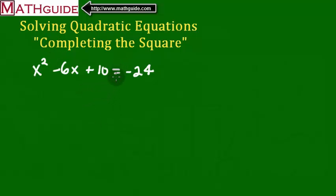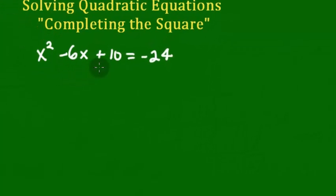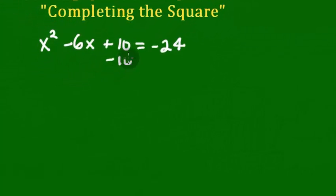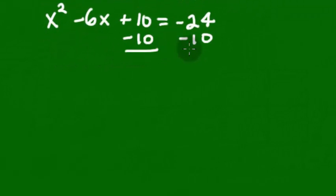This is how the method works. I'm going to take you step by step. First thing you're going to do is try to get the x terms alone on one side. To do that, we are going to subtract 10 from both sides, doing a little bit of algebra to move over the constant term. We're going to get x squared minus 6x equals negative 34.